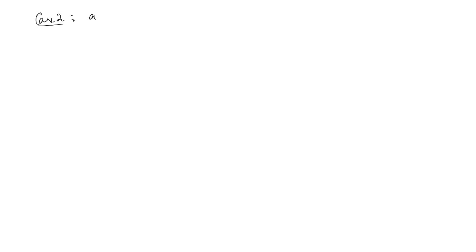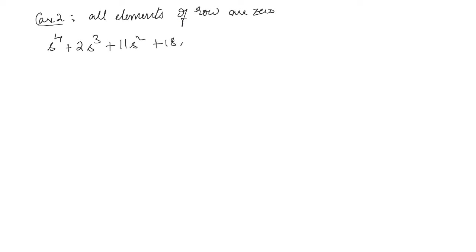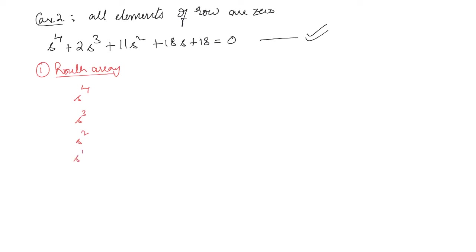The next special case of the RH criterion is when all elements of a row become zero. For this we consider the example: s⁴ + 2s³ + 11s² + 18s + 18 = 0. The first step is always to construct the Routh array: s⁴, s³, s², s¹, and s⁰.